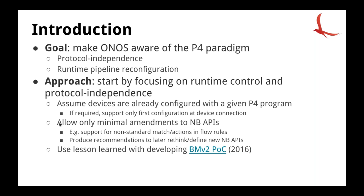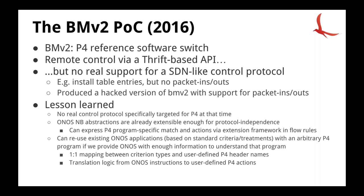We're going to use lessons learned from developing the BMV2 POC in 2016. BMV2 is a P4 reference software switch. At the time, BMV2 offered a Thrift-based API for remote runtime control — for example, to install table entries once the switch is programmed with a P4 program. But the Thrift-based API is not a real southbound control protocol like OpenFlow; it didn't offer support for packet-ins or packet-outs. As a result, we had to produce a hacked version of the BMV2 software switch to support those.